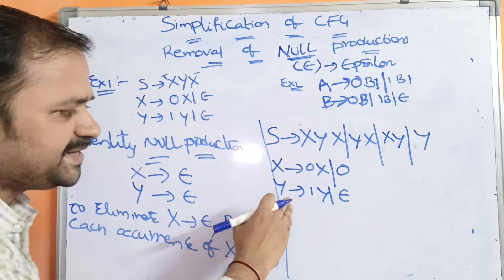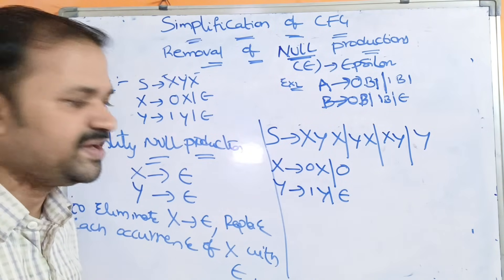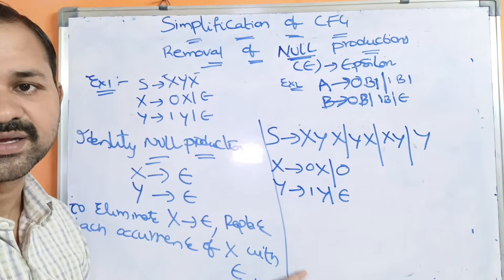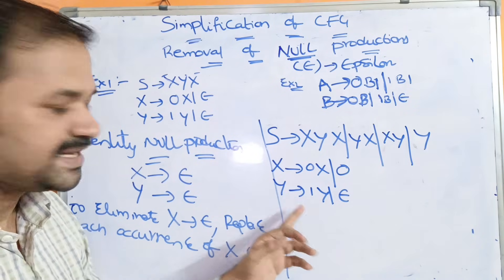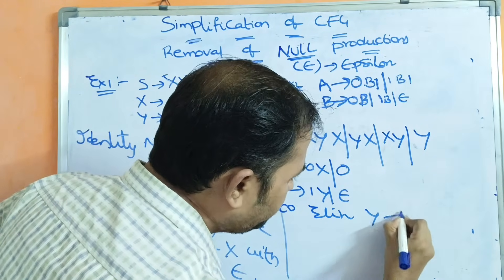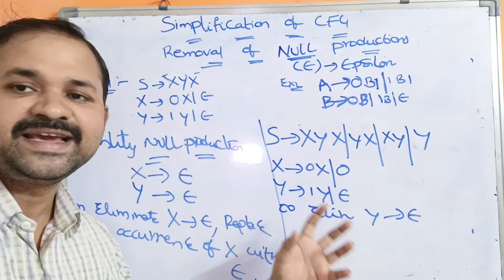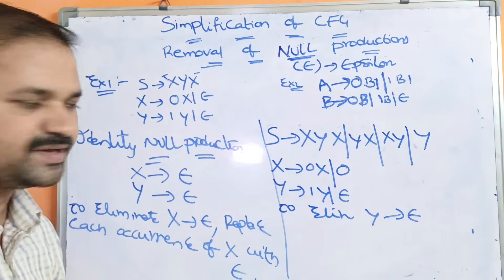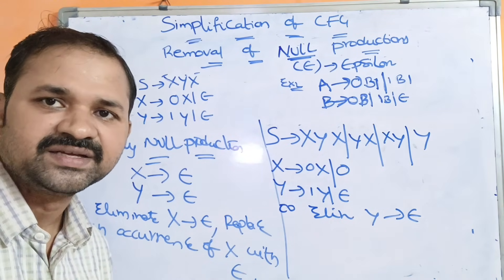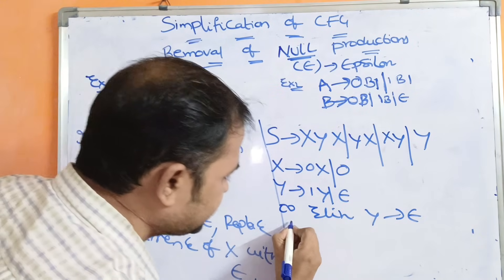Now our target is to eliminate Y implies epsilon. To eliminate Y implies epsilon, we replace each occurrence of Y in the right-hand side with epsilon. We search for Y in the right-hand side of all productions and replace it with epsilon.